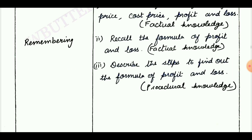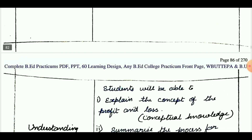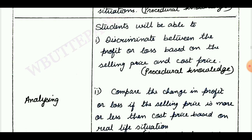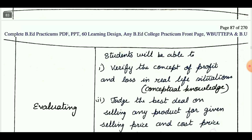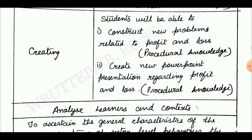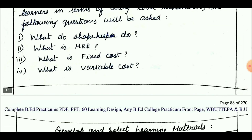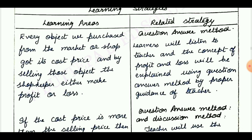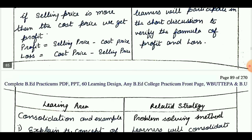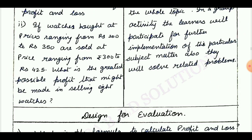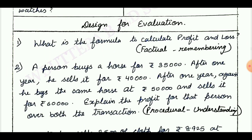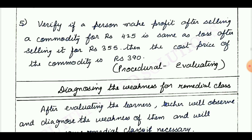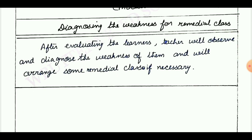Learning design number 19 is taken from Class 9. Today's topic is Profit and Loss. Objectives are remembering, understanding, applying, analyzing, evaluating, and creating. Next: develop and select learning materials, learning strategy, design for evaluation, and diagnosing the weakness.